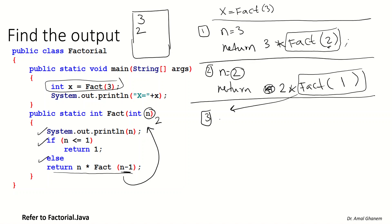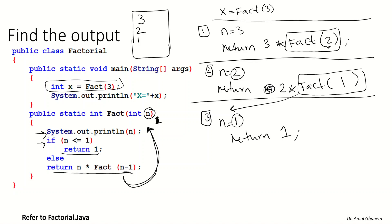This will be the third call. We change the value of n to 1 and re-execute the method. Output the value of n — so the output will be 1. Check the value of n: is it 1? Yes. So we have reached the end. We return 1.